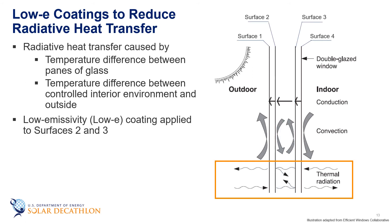Now we've discussed strategies for reducing conduction and convection — how about radiation? With radiative heat transfer, we have a temperature difference between the two panes of glass, as well as between our controlled interior environment and outside. To lower radiative heat transfer, we add a thin, nearly transparent coating called a low emissivity or low-E coating to the glass surfaces. Typically this coating is silver or tin oxide. Because the coating is somewhat fragile, it's often placed on the inner layers — surface 2 or surface 3, and sometimes both — lowering the U-factor of the glass.